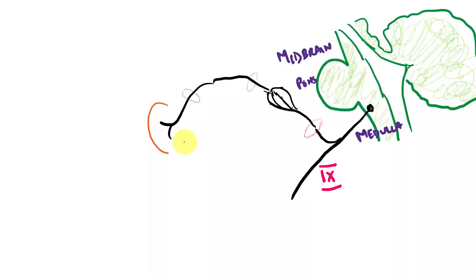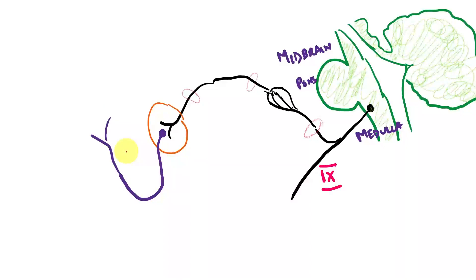That relay station is called the otic ganglion, which is the ganglion of the parotid gland. From the otic ganglion you have another neuron — so there are two neurons in total. The first is called the pre-ganglionic neuron and the second is called the post-ganglionic neuron. I have used two colors: the pre-ganglionic neuron is black and the post-ganglionic neuron is blue.